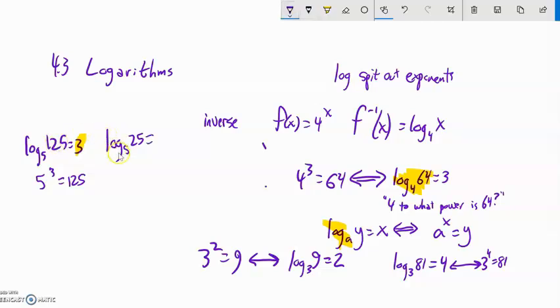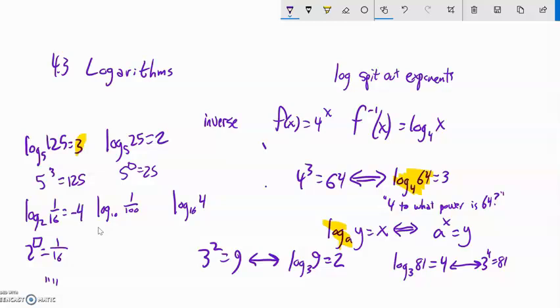Next one, log base 5 of 25. This is asking 5 to what power would give me 25? Well, 2. Log base 2 of 1/16. So 2 to what power would give me 1/16? Well, if it was 16, if it wasn't 1/16, it would be 2, 4, 8, 16, it would be a 4. But since it's the reciprocal of that, it would be negative 4. Remember that negative exponents flip the fraction.